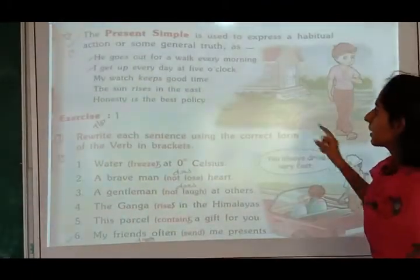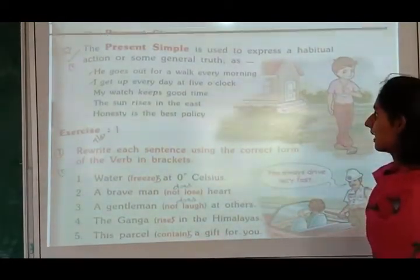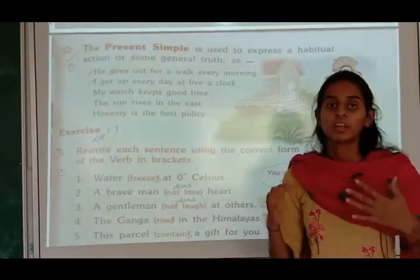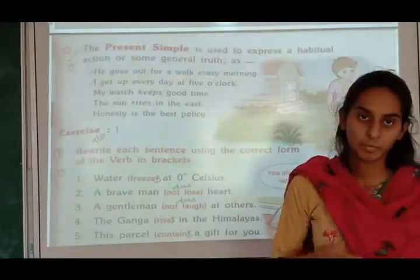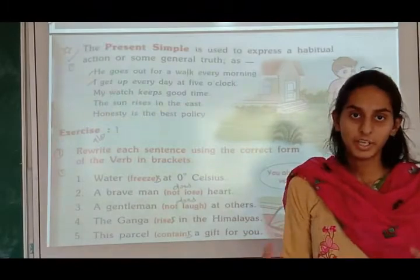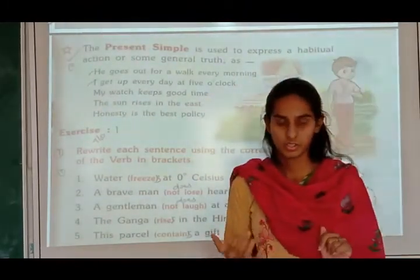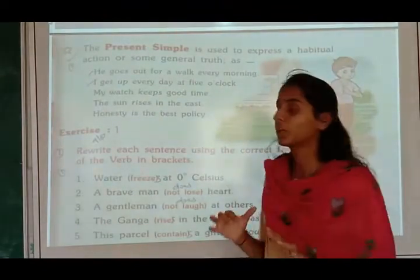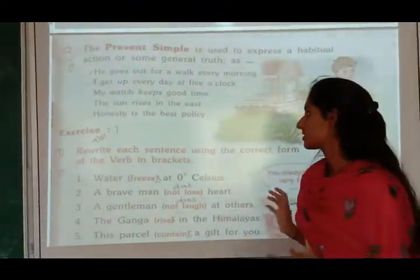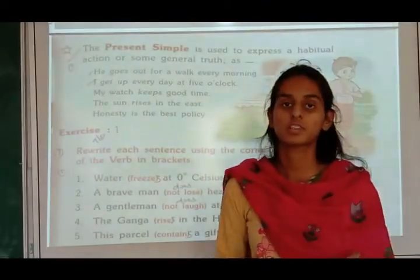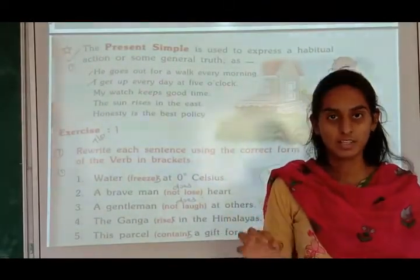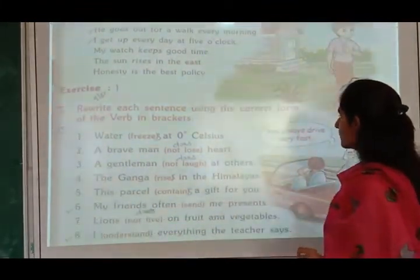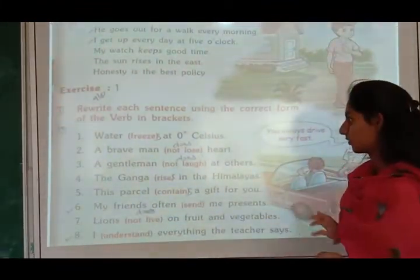The present simple is used to express a habitual action or some general truth. For habits we have, like 'I get up early in the morning' — that is our habit. For universal truth, 'The sun rises in the east' or 'Honesty is the best policy.' So we use present simple in these conditions.